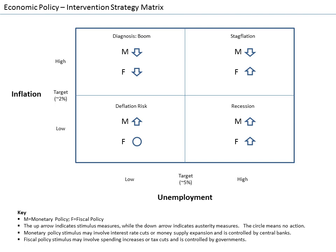Macroeconomic policy is usually implemented through two sets of tools: fiscal and monetary policy. Both forms of policy are used to stabilize the economy, which can mean boosting the economy to the level of GDP consistent with full employment. Macroeconomic policy focuses on limiting the effects of the business cycle to achieve the economic goals of price stability, full employment, and growth.